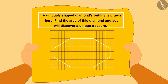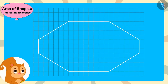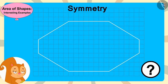Now, a new puzzle appeared on the paper. A uniquely shaped diamond's outline is drawn here — find the area of this diamond and you will discover a unique treasure. Chanda read the message and started looking for the answer. Children, can you also find the answer using the concept of symmetry that Chanda adopted?